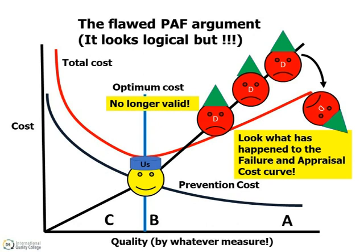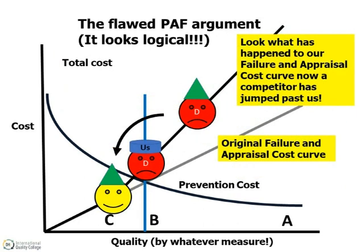What then happens is illustrated here. As the best producer continually reduces his quality-related costs, it will effectively drive the costs of the less capable competitors upwards behind him. The reason being that society will now expect the better product and will calibrate his expectations accordingly. This will result in a lower level of tolerance for the poorer performers, with the result that they will get more complaints and fewer sales.